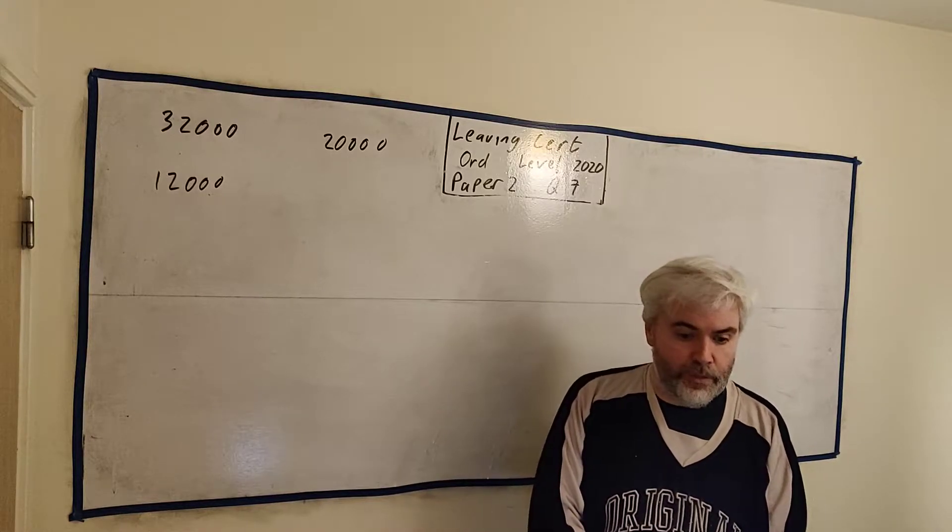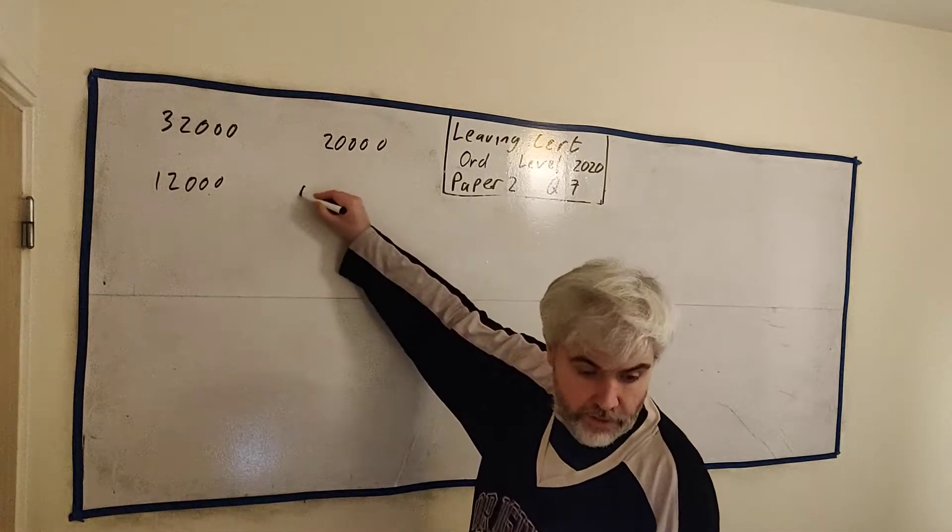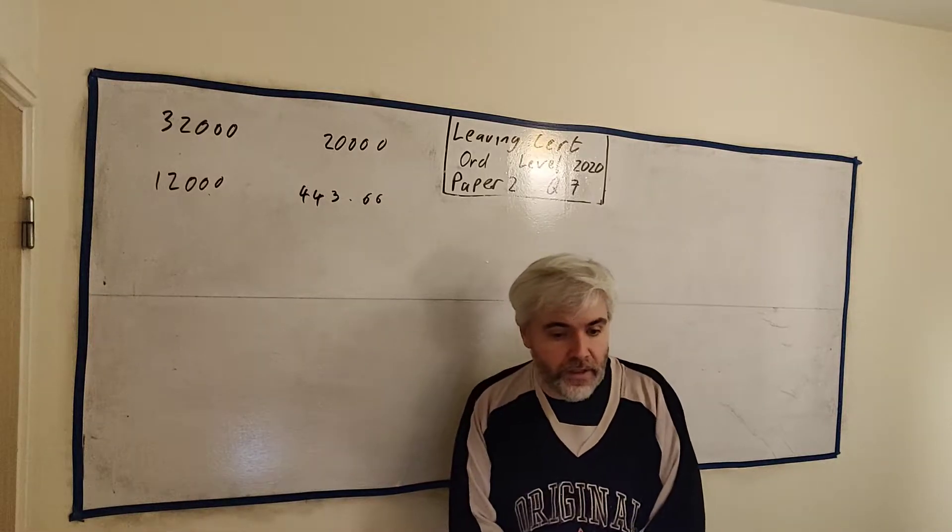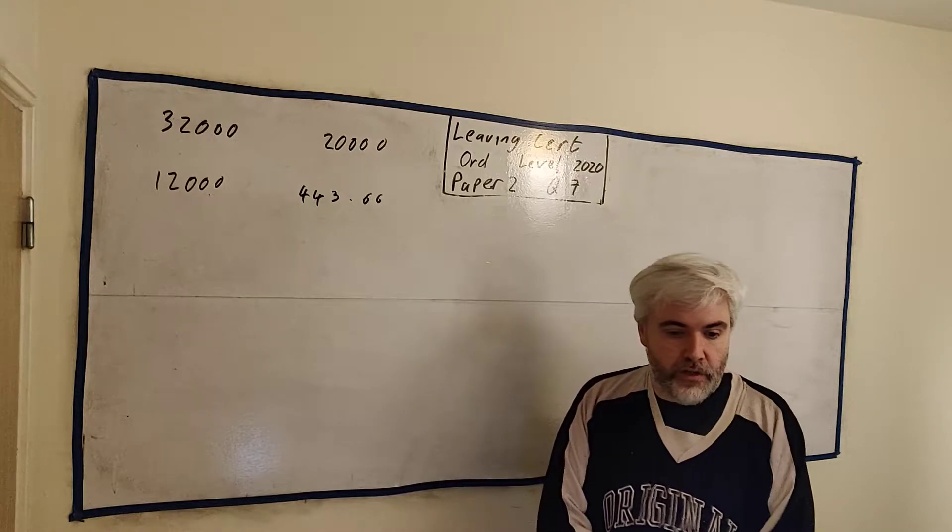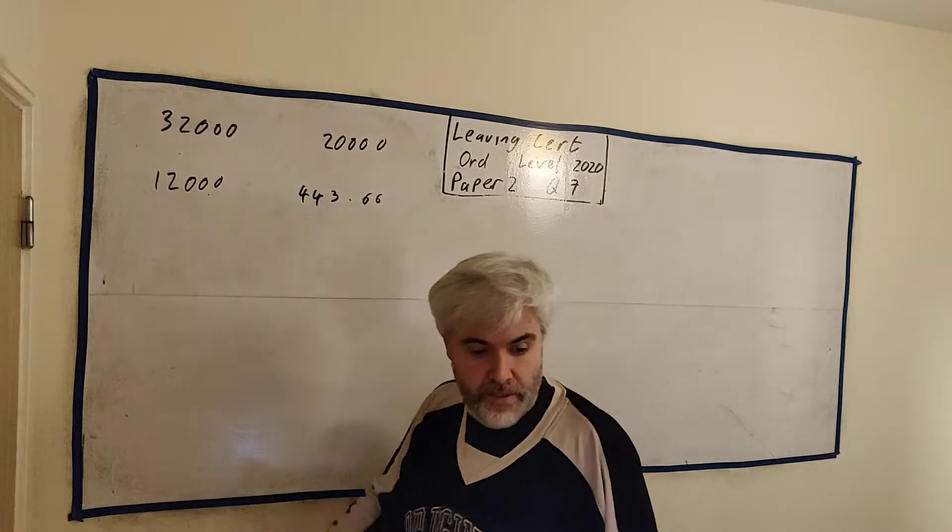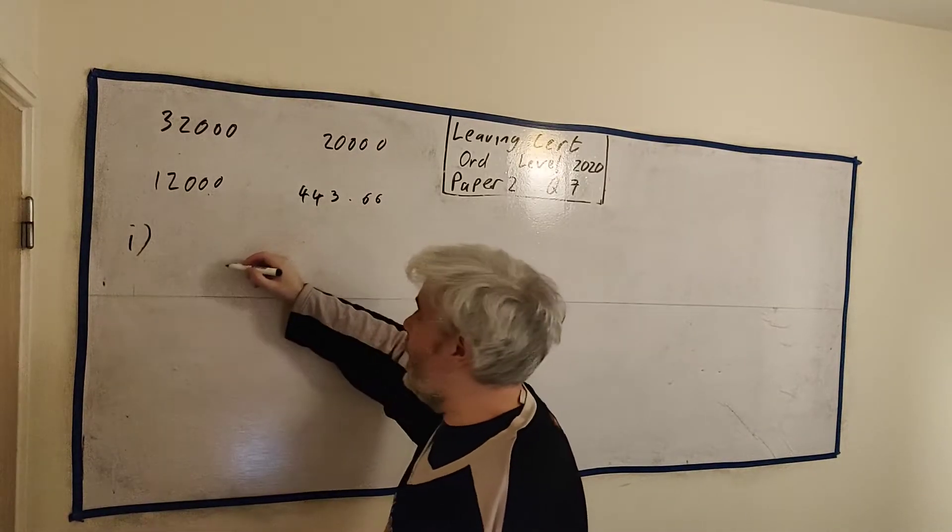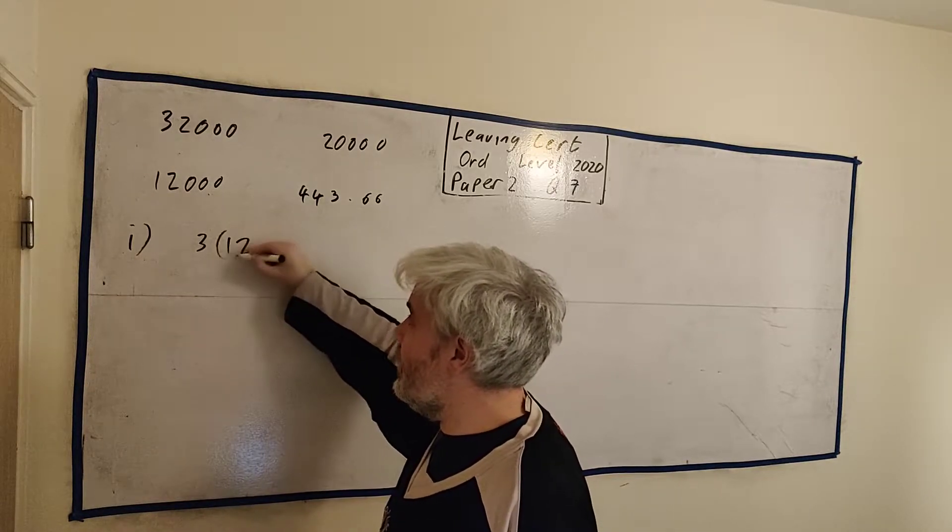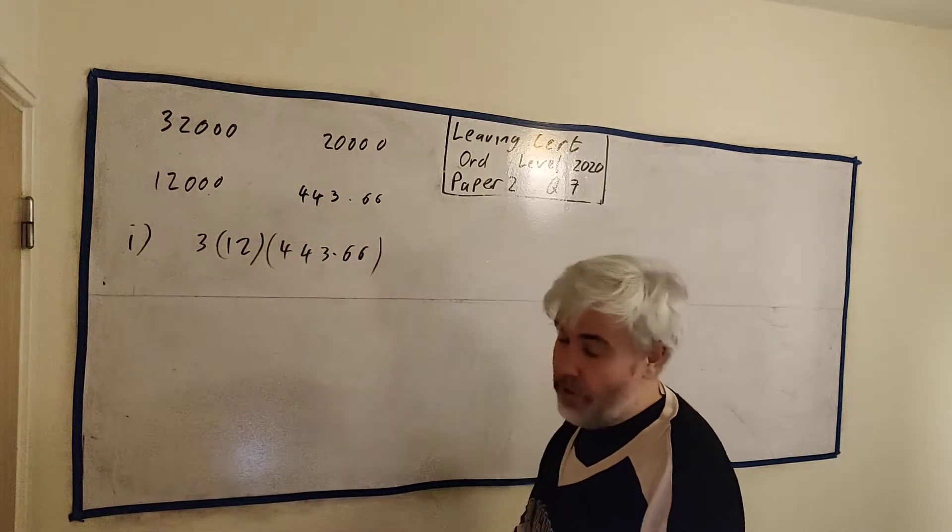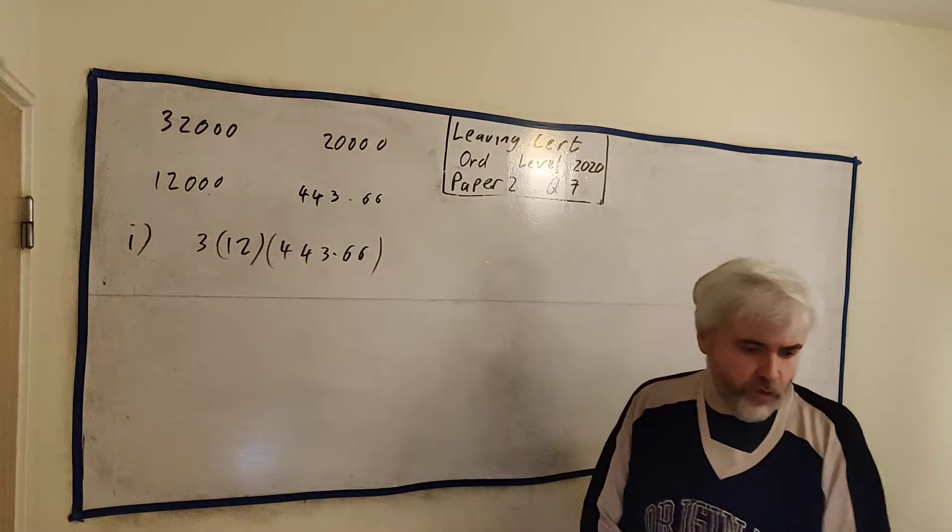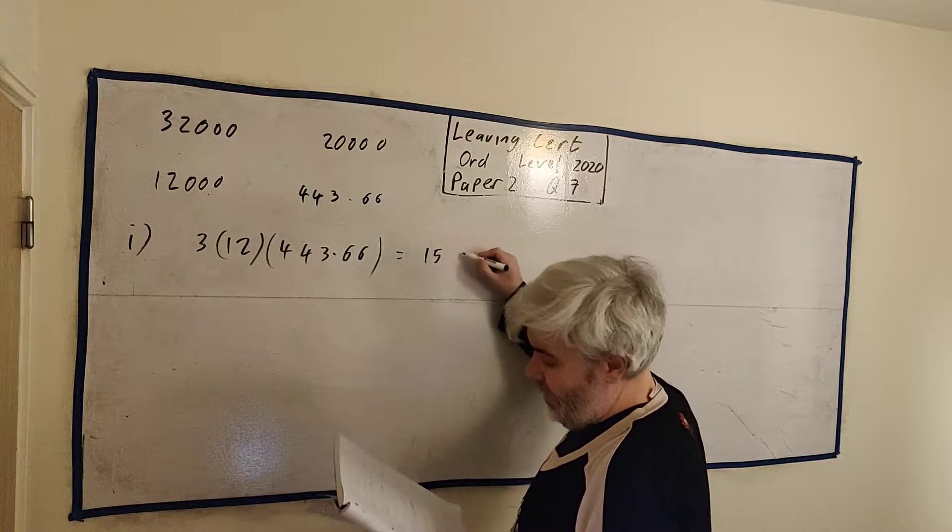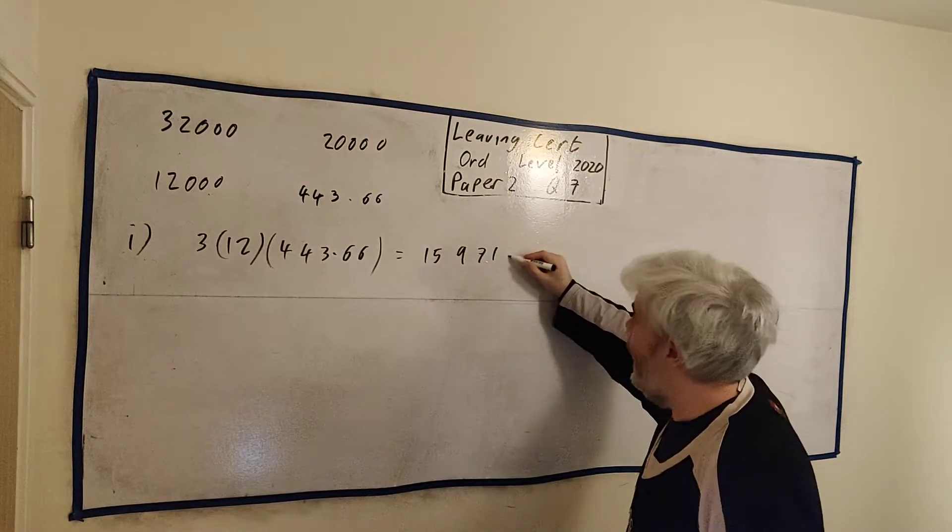So $32,000 is the car. I start jotting down all these numbers that are important. $20,000 is the allowance he's given. That means he still needs to find $12,000 somewhere. It tells us he borrows the balance of the money from his credit union, that's the $12,000 here. His fixed monthly repayment over three years is €443.66 every month. How much money does Pat pay in total to the credit union for this loan?